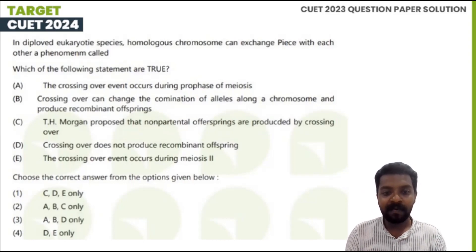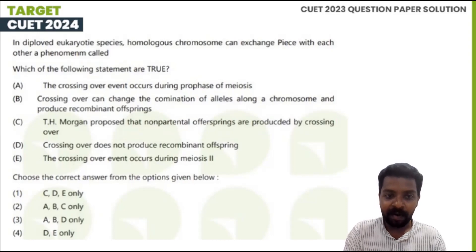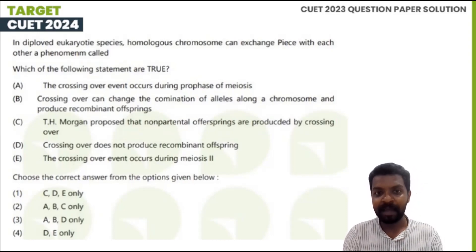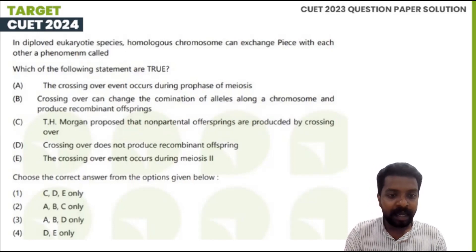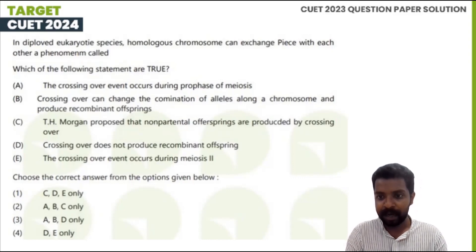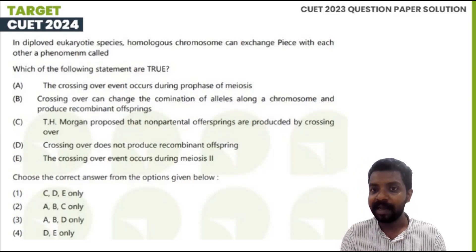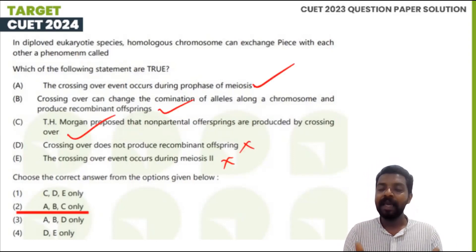The crossing over does not produce recombinant offspring — Option 1. About the option 3A and option 2A, which is ABC only — that is not how you can find it.